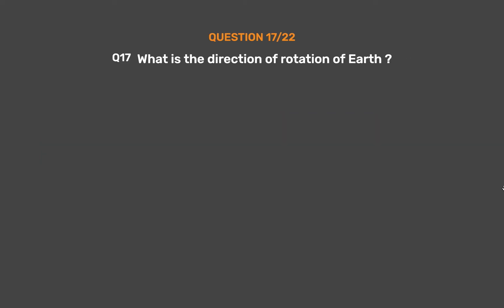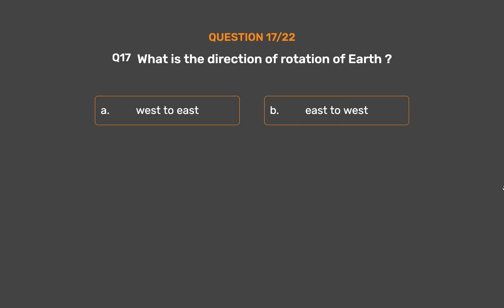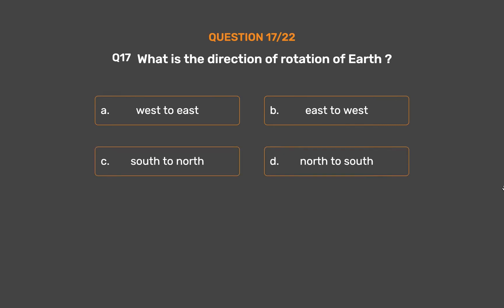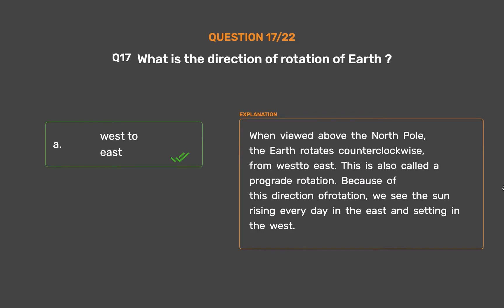Question number 17. What is the direction of rotation of Earth? Option A: West to East. Option B: East to West. Option C: South to North. Option D: North to South. The correct answer is Option A: West to East. When viewed above the North Pole, the Earth rotates counterclockwise, from west to east. This is also called a prograde rotation. Because of this direction of rotation, we see the sun rising every day in the east and setting in the west.